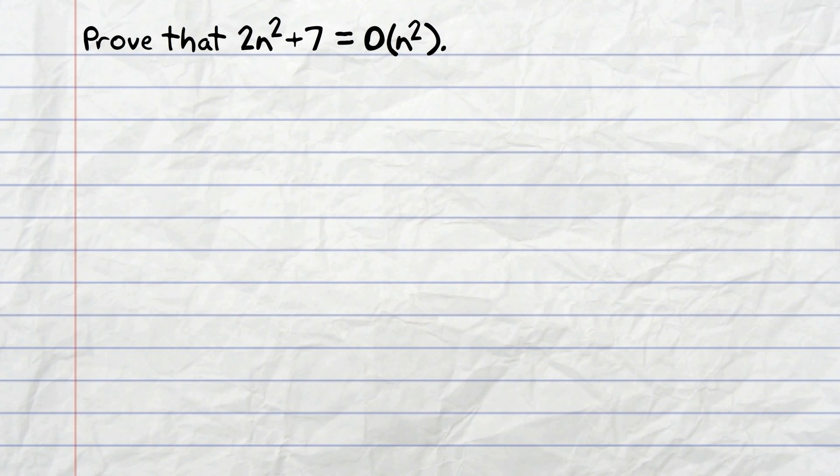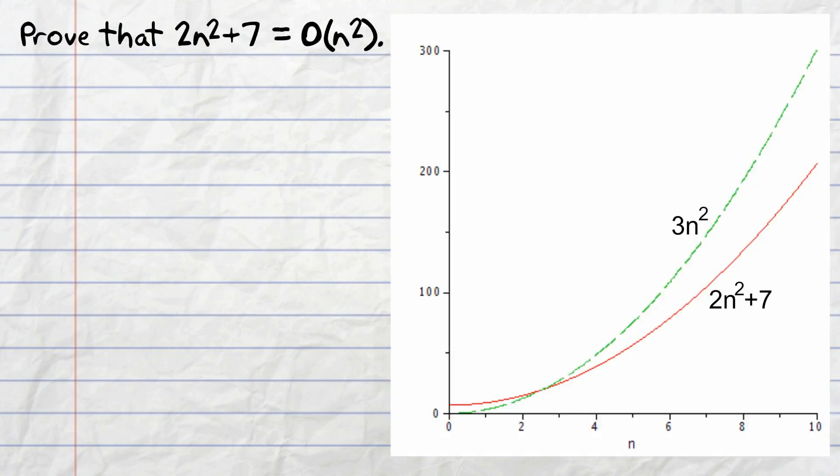So let's look at the first question. What we can do with this n squared here is that we can search for a constant. Now I'm going to use the number 3. And now let's graph 3n squared and 2n squared plus 7. And we can see that pretty quickly, as n increases, we have the situation where 2n squared plus 7 is less than 3n squared. And if we can find a constant, be it 3 or 4 or 1,000, such that this property is satisfied, then we say that it's big O, that 2n squared plus 7 equals big O of n squared.